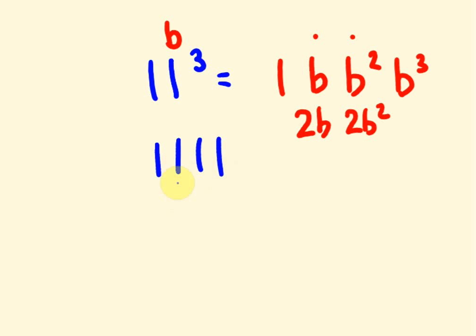And then what I do is I double this number and this number. So 2 and 2. And this leads us to the answer here: 1, 1 plus 2 is 3, 1 plus 2 is 3, and this number here is 1. Pretty cool right?